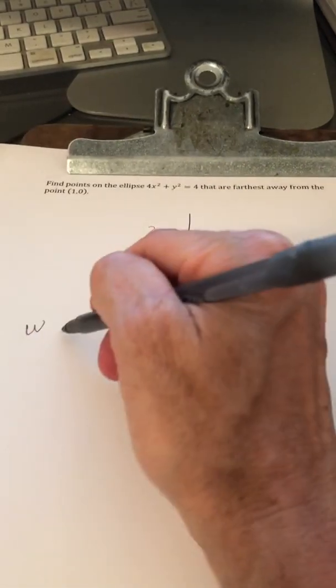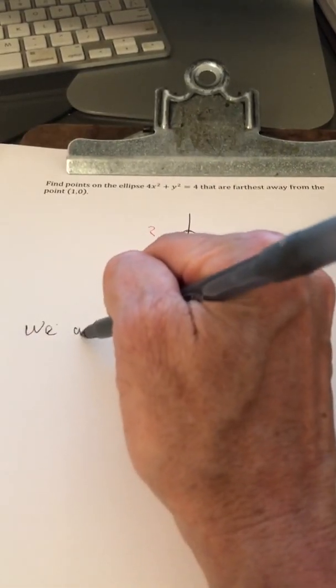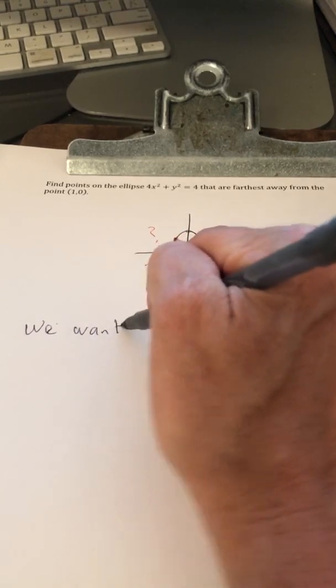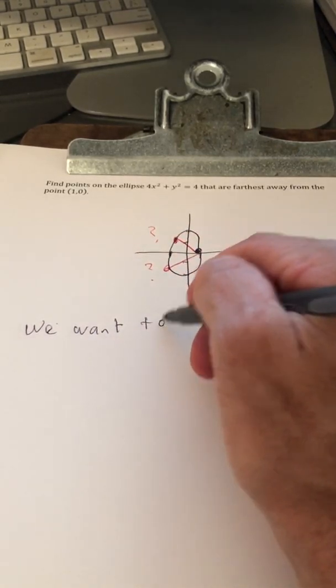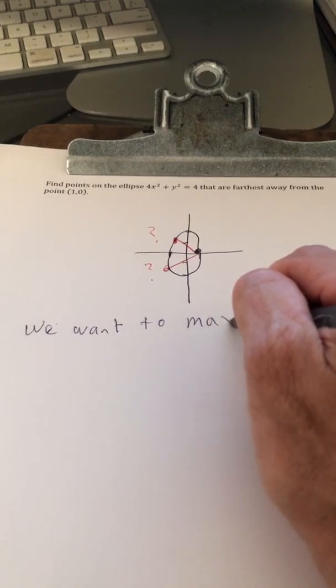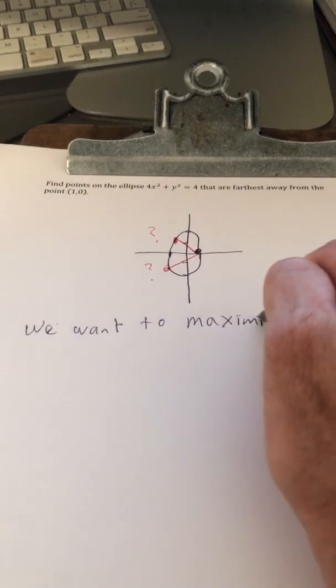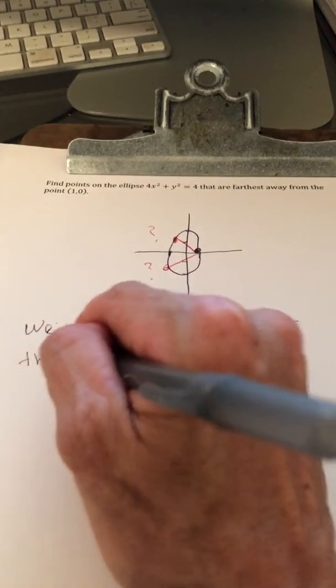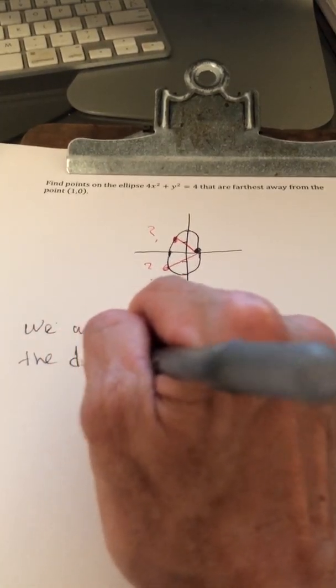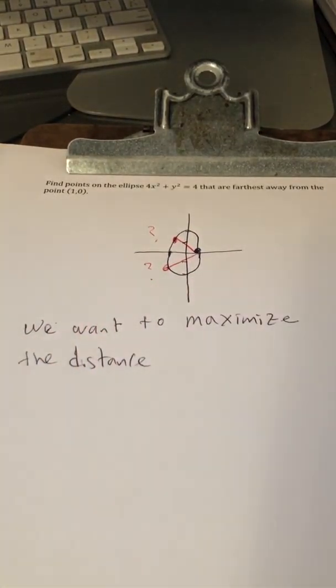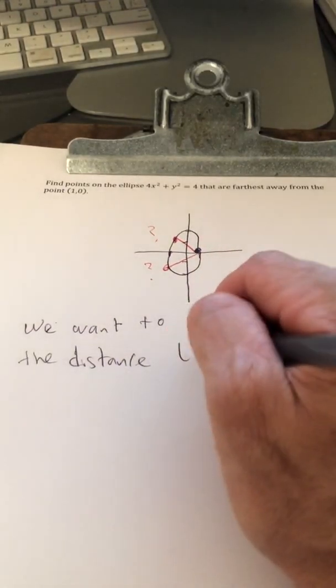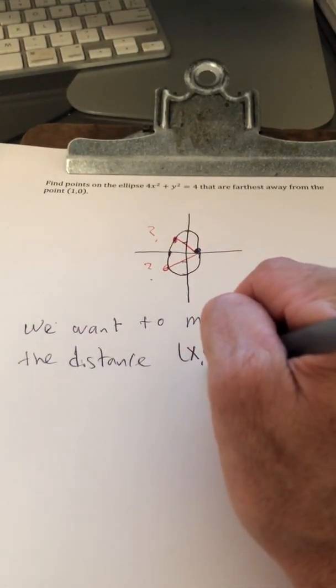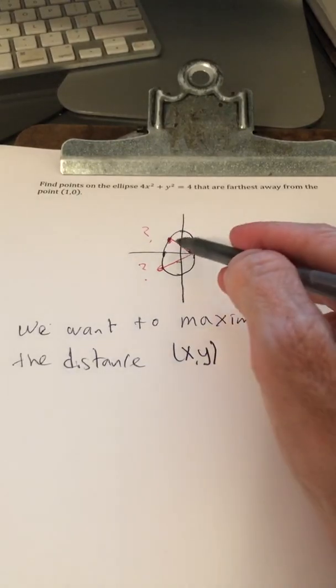So in this problem, we want to maximize the distance from some ordered pair (x, y). We don't know what they are yet, but we expect there to be two of them.